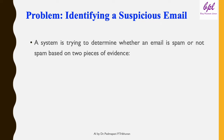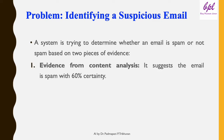A system is trying to determine whether an email is spam or not spam based on two pieces of evidence. One is evidence from content analysis which suggests the email is spam with 60% certainty.